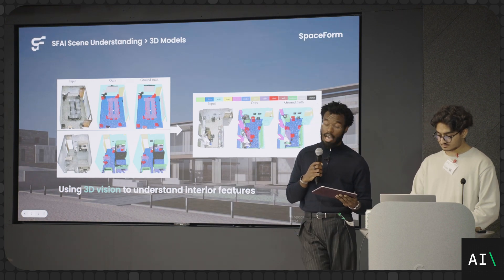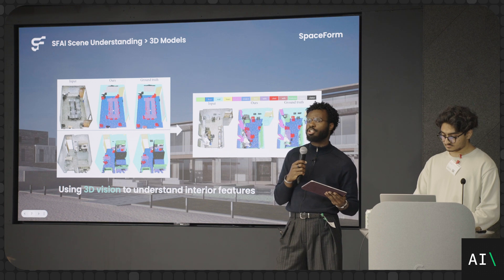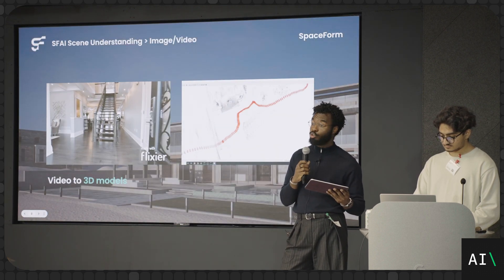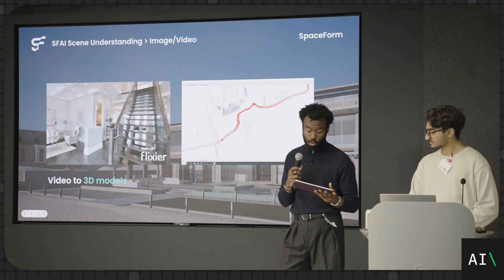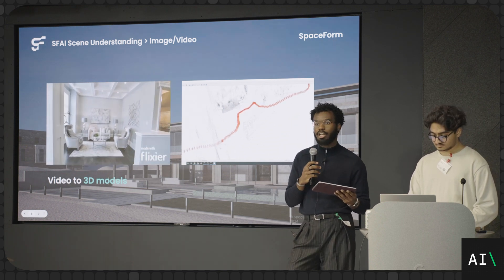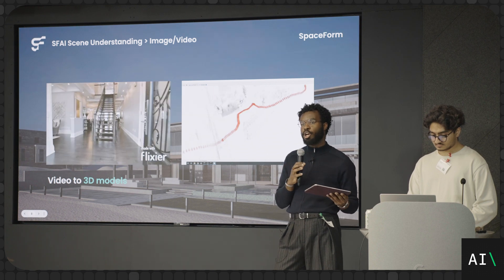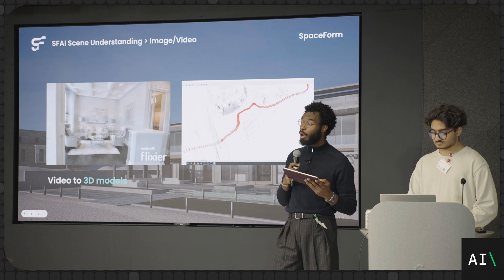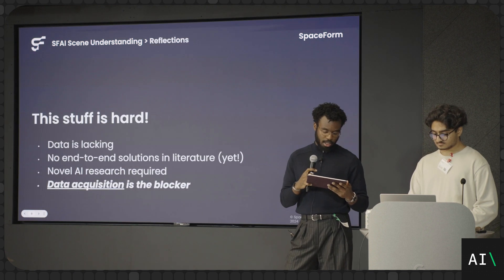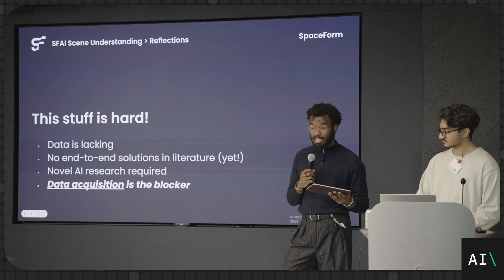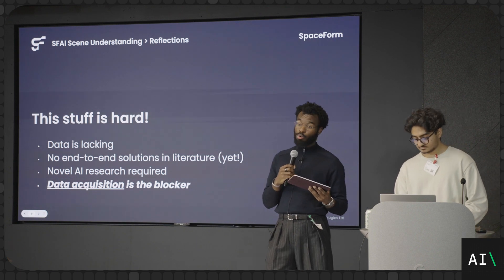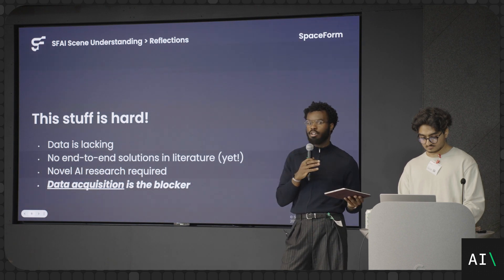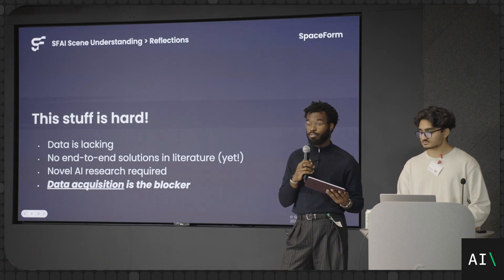3D computer vision gives us more rich information about what's going on in a scene and where. And photogrammetry allows us to produce a 3D model from any given input. The idea is that if we can combine the three, we can turn basically anything our clients give us into an understanding of the form and function of the space. Scene understanding is actually quite difficult, primarily because acquiring the volumes and quality of data to cover all the variants we observe is difficult.